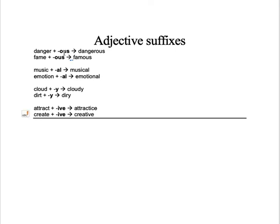There are suffixes that have meaning. For example, '-able' means that something can be done. 'Wash' is 'lavar', but if you say 'washable', it means that something can be washed — very similar to Spanish 'lavable'. Or 'rely', which is 'confiar': if you say 'reliable', it means that you can rely on somebody — 'confiable'. For example, 'break' is 'romper', so you can have 'unbreakable' — something that cannot be broken.